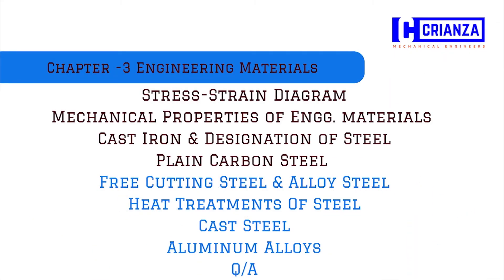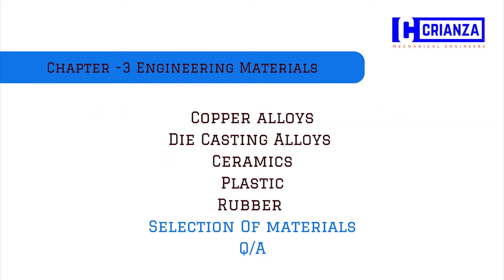In this chapter we will discuss about engineering materials. First we will see the stress-strain diagram and then mechanical properties of engineering materials, cast iron, and designations of steel like plain carbon steel, free carbon steel, and alloy steels, heat treatment of steel, cast steel, ceramics, plastics, rubber, and some alloys like aluminum alloys, copper alloys, and die casting alloys.